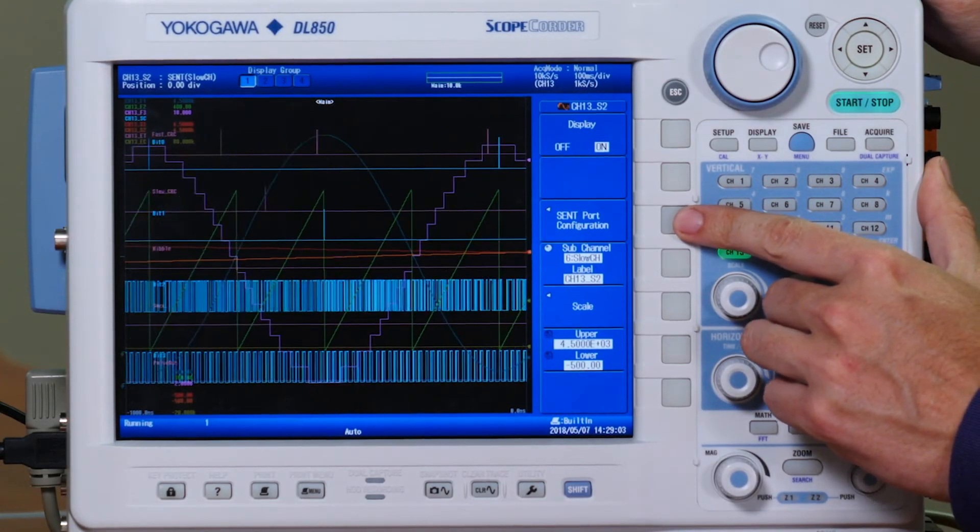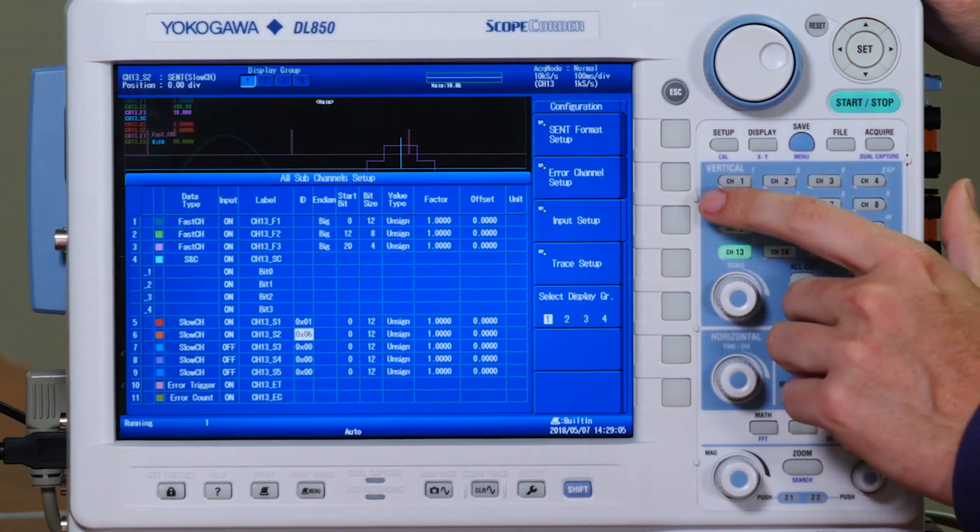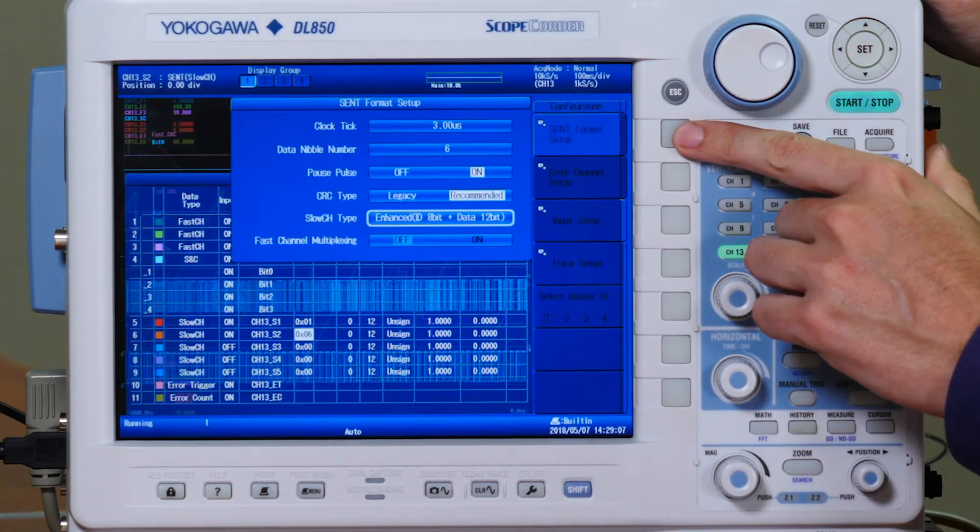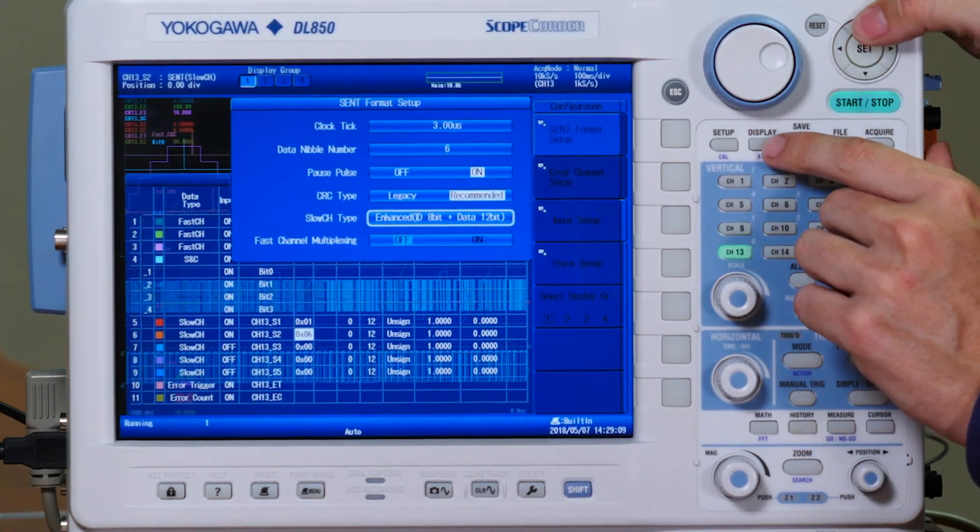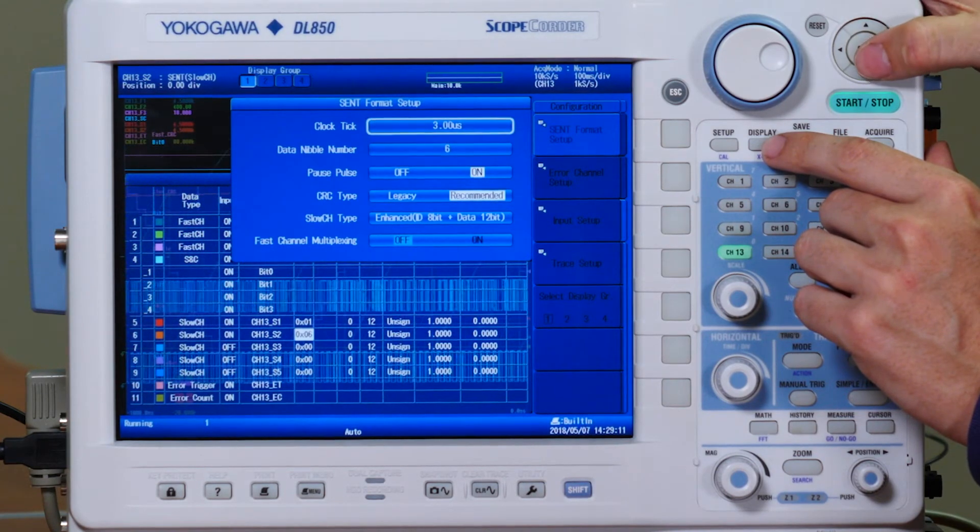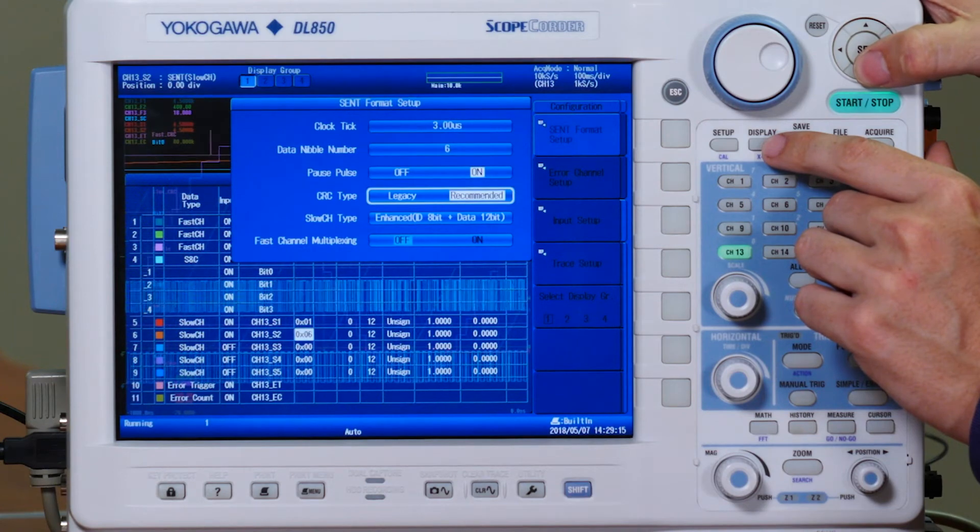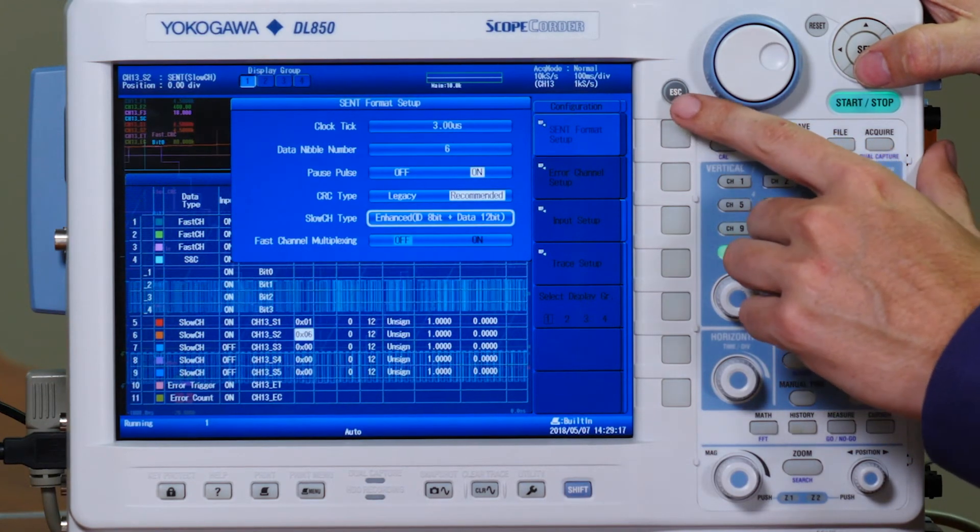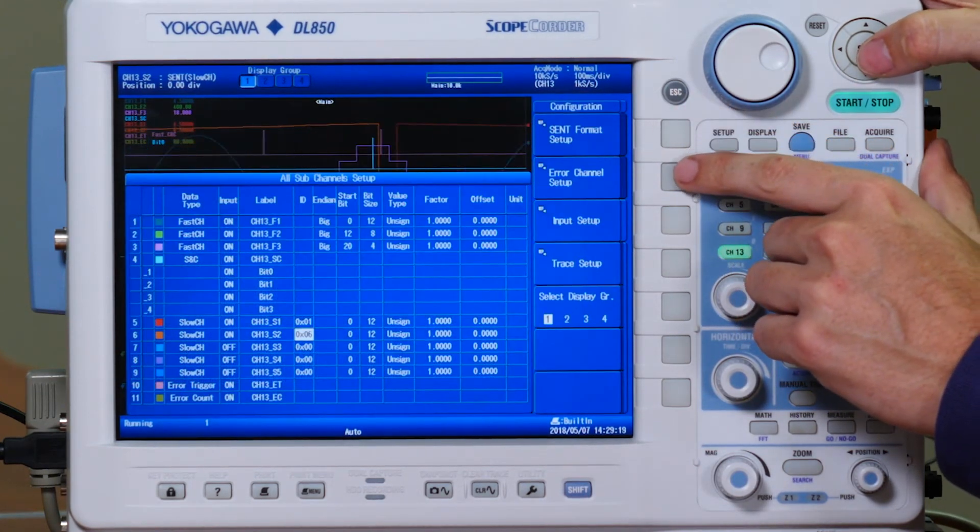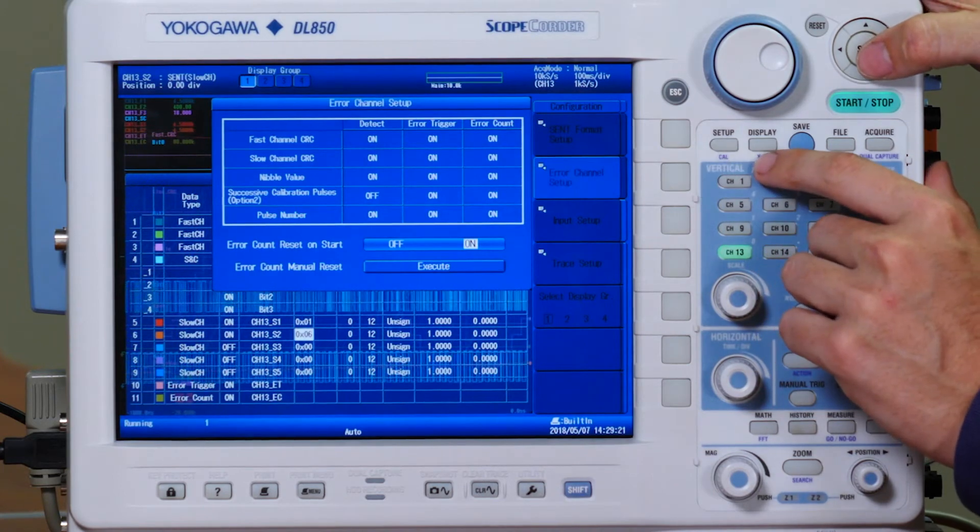Within our SENT port configuration menu, we have several sub-menus that allow you to adjust settings for your signal type. Within the SENT format setup menu, we can change settings like the master clock tick time, CRC type, and the slow channel type. We also have the ability to change settings on our error channel.